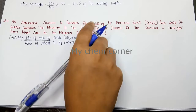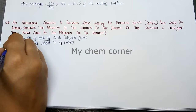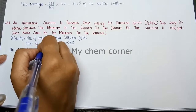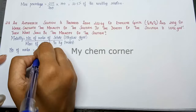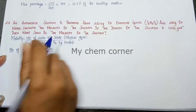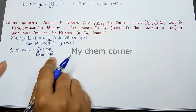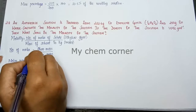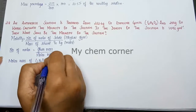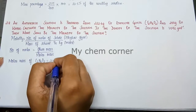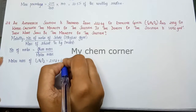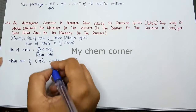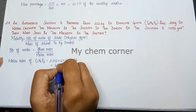The number of moles of solute is not given directly — we calculate it from the given mass. Number of moles equals given mass divided by molar mass. The formula of ethylene glycol is C2H6O2, so molar mass equals 2 carbons × 12, plus 6 hydrogens × 1, plus 2 oxygens × 16, which gives 62 grams per mole.